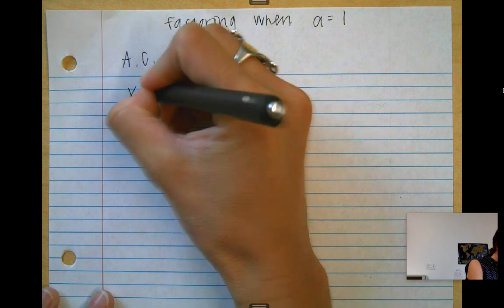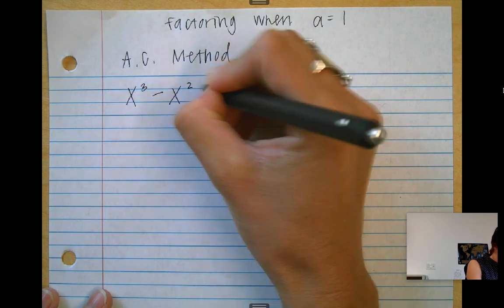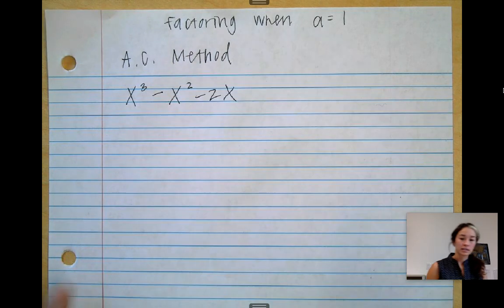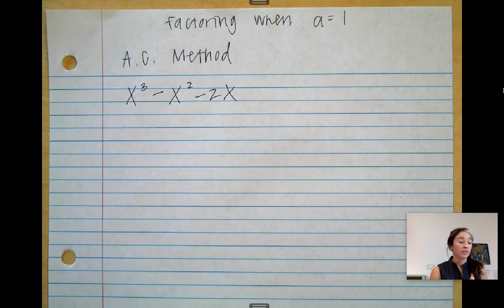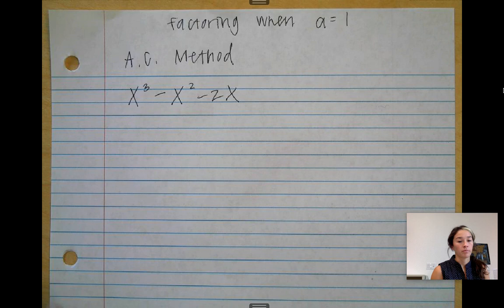My first example: x cubed minus x squared minus 2x. The first thing we want to do always when factoring is see if we can pull out a GCF. Is there something common with each of these terms? And there is. There's an x.